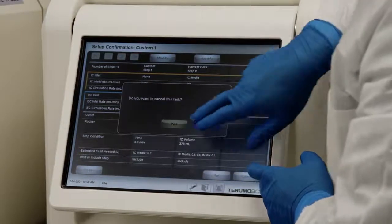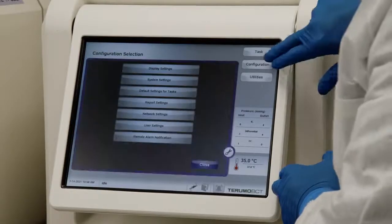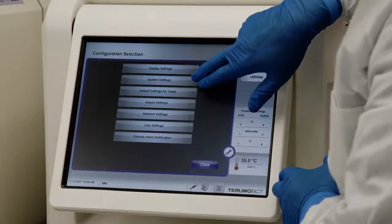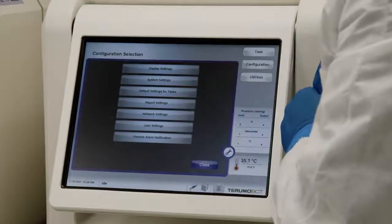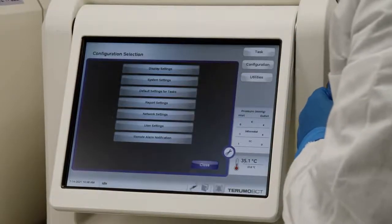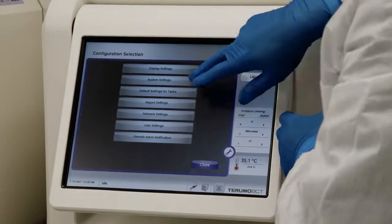Let's talk more about configuring the device to better suit your needs. Here you can change the display settings, the system settings, and the task settings and set up user permissions. Once your protocol parameters are set up, you can store them in the system's memory through configuring the default task settings.